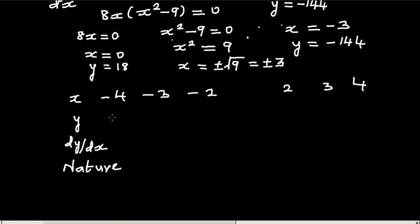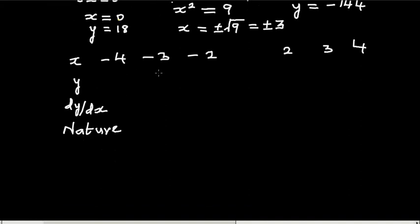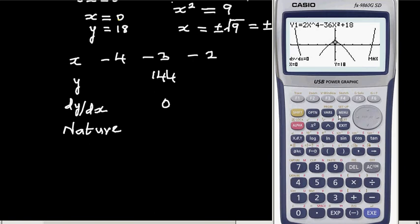Y value is not important. We know at minus 4 the gradient is going to be - okay, I'm not interested in the y value. The gradient is going to be positive here and the gradient is going to be negative here. So let me bring up the table.